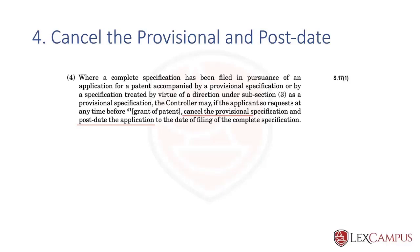The consequence of cancelling the provisional is that the priority you obtained is lost. When the controller cancels the provisional, the controller must change the priority date — this is what we call post-dating the application. It will be post-dated to the date of filing the complete application. Since you have two filings — the provisional and the complete — if the provisional is cancelled, it is post-dated to the date of filing the complete specification. This post-dating must also happen within the 12-month window.